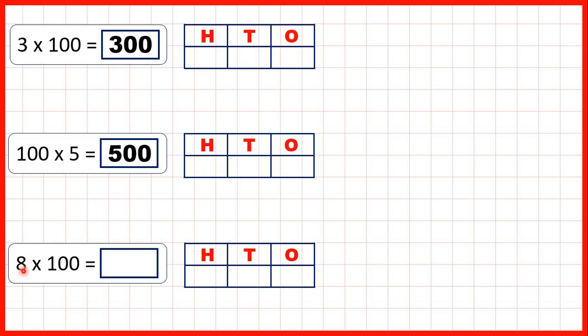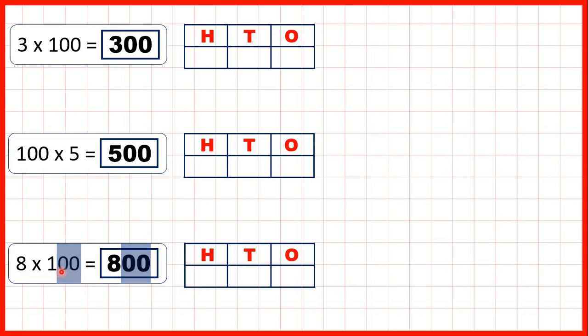And now 8 times 100 is 800 because 8 times 1 is 8, and then we need two zeros after the 8.